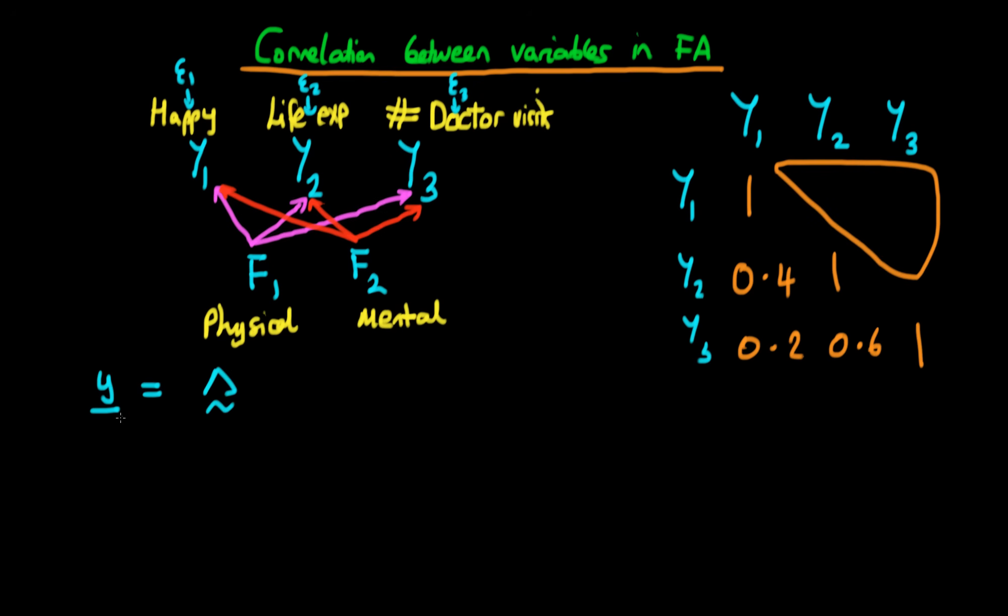We have our vector of dependent variables, so this is y with a line underneath it, is equal to capital lambda where capital lambda is a matrix of the weightings on each of the factors on each of the observed variables times eta where eta here is just in this case f1 and f2 as a vector plus epsilon where epsilon here is e1 e2 and e3. What we're trying to do is we're trying to use our model to come up with the variance of y as our model predictor.